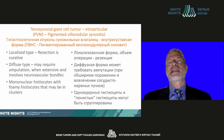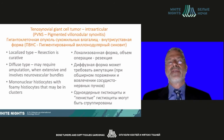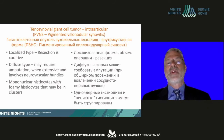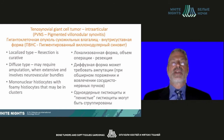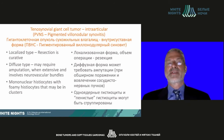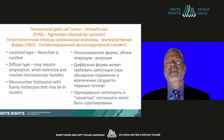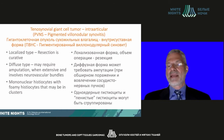With the localized type, which is the most common, resection is curative. The diffuse type may require amputation when extensive and involves neurovascular bundles. Unfortunately, we have extensive experience with this diffuse type. Mononuclear histiocytes can be seen on pathology with foamy histiocytes that may be in clusters.